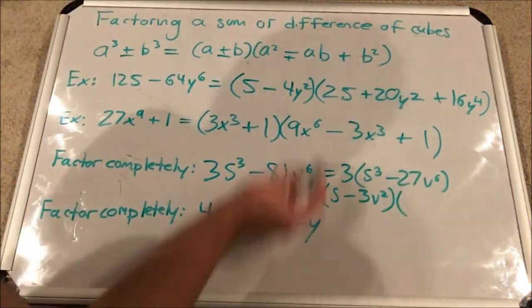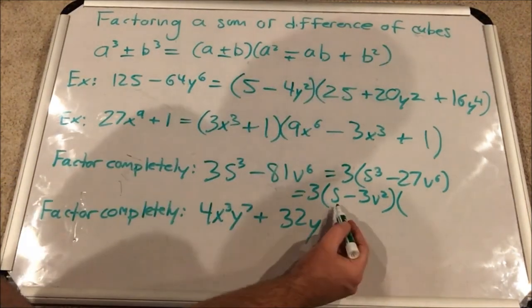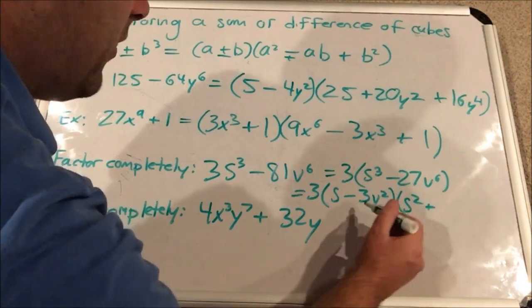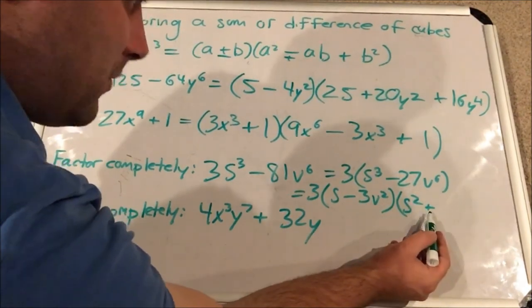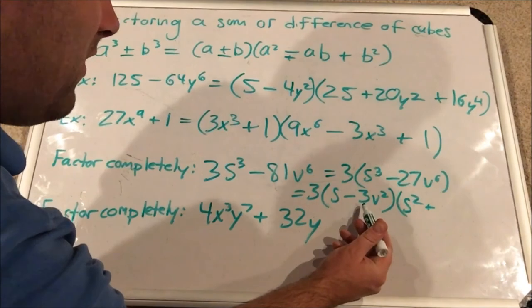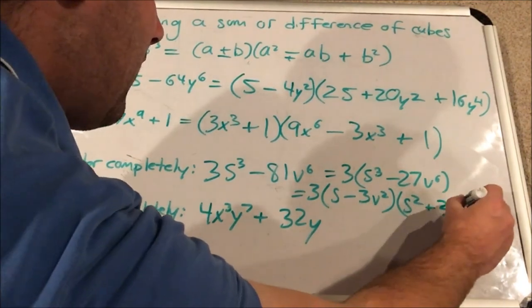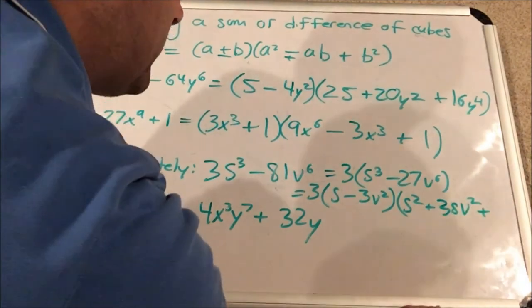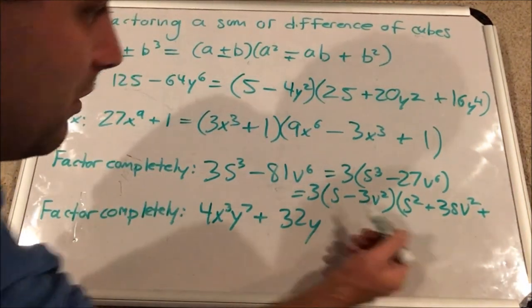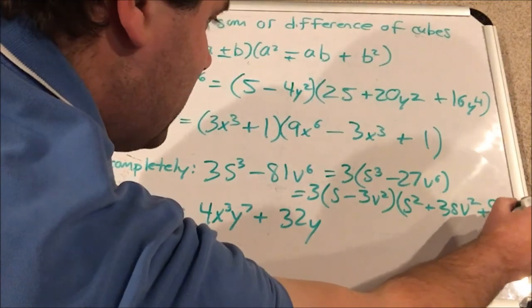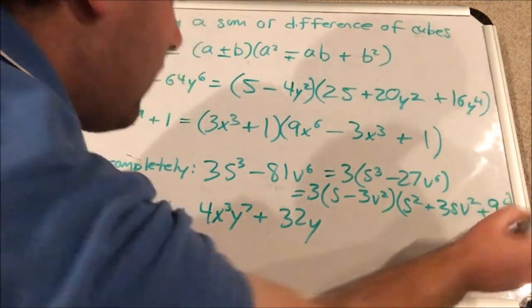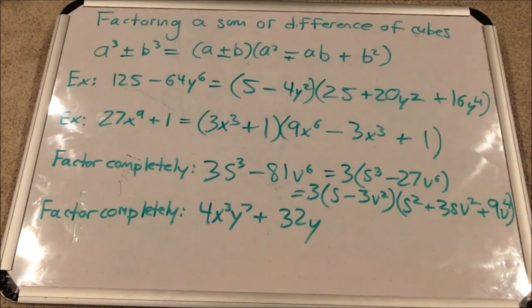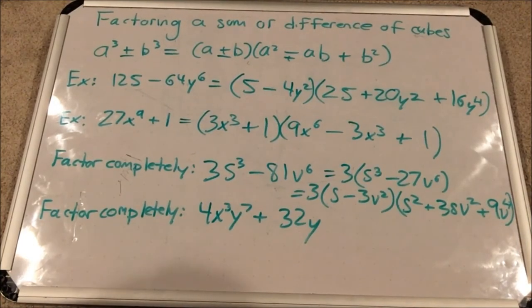Next, we're going to do the quadratic term. S squared plus, always positive, sorry, opposite, excuse me, opposite, s times 3 v squared is just 3 s v squared. And then always positive, the third sign, the square of 3 v squared, which would be 9 v to the 4th. There's a 3 in front because I first factored it out before I even did the sum or difference of cubes factorization. Okay.